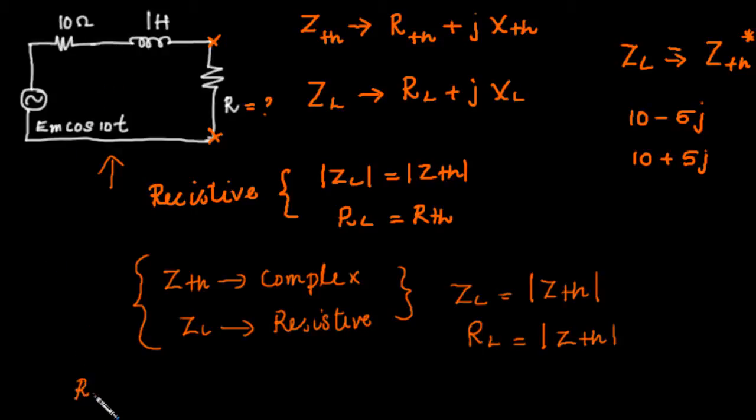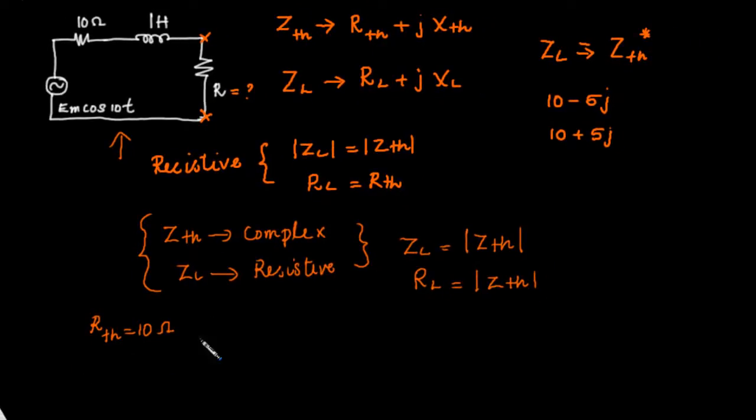We have RTH = 10 ohms. What is the impedance offered by 1 Henry? jω, which will be j times omega. ω = 10 because the voltage is Em cos 10t.